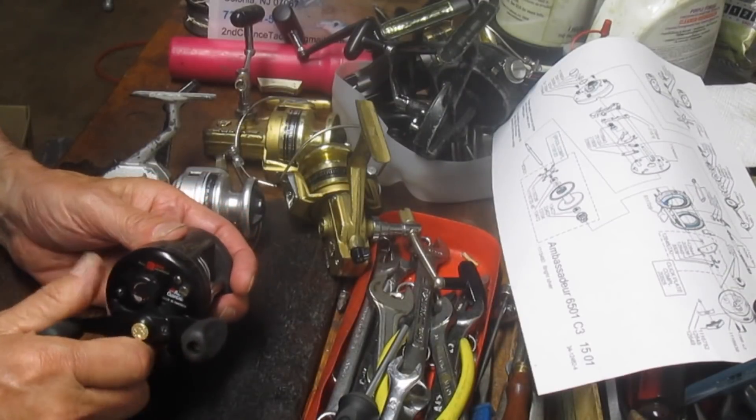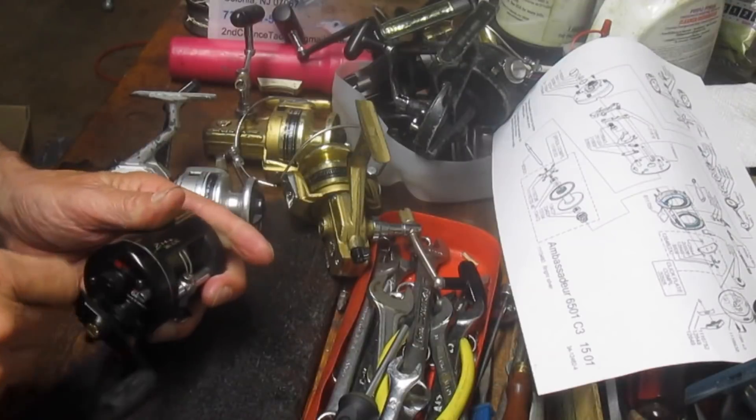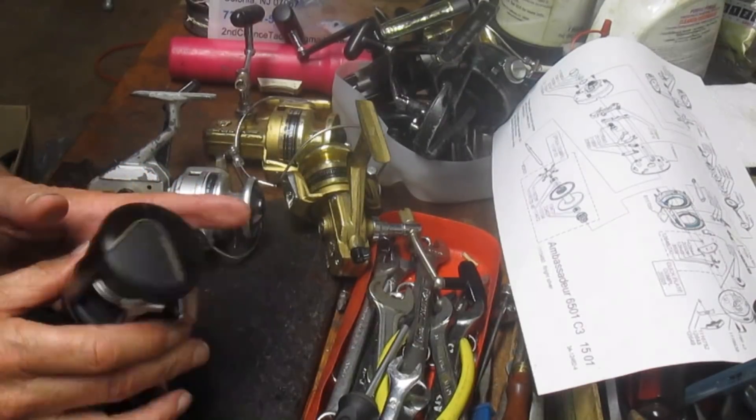When you're working on a reel like this, make sure you tighten down the drag to test that, to make sure that the drag is operational as well. We'll do that one. That's a 3600C Ambassador.